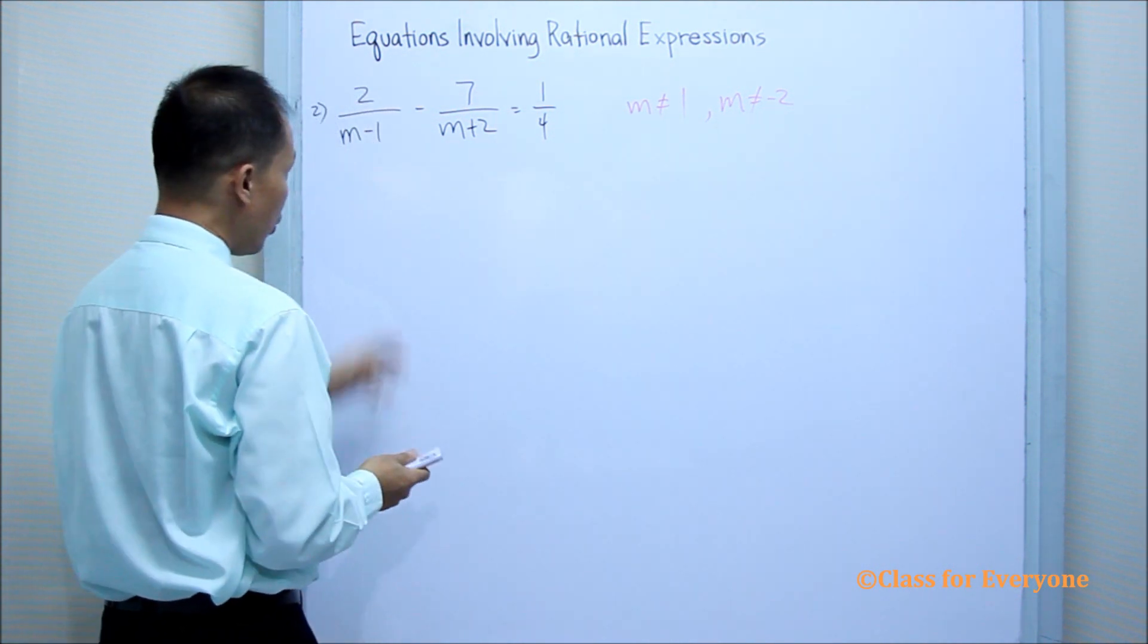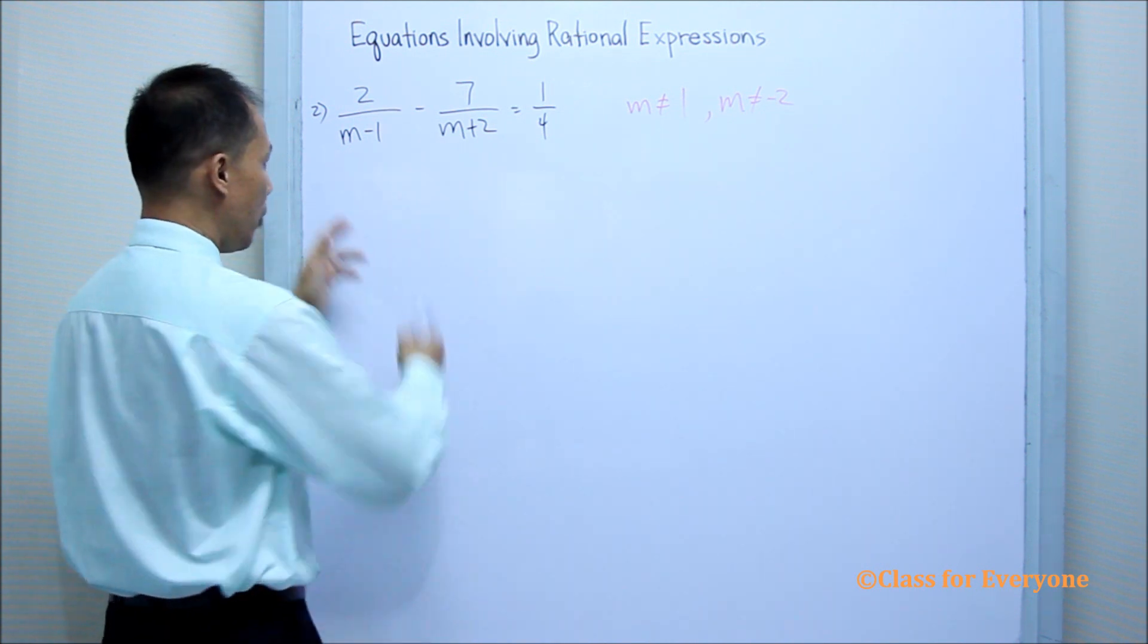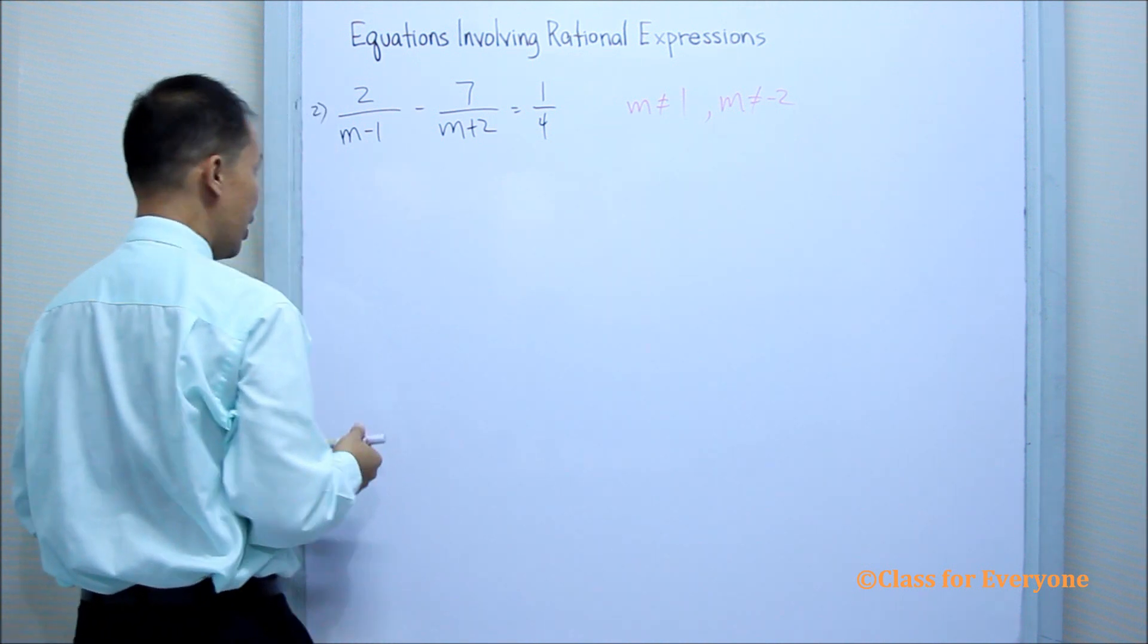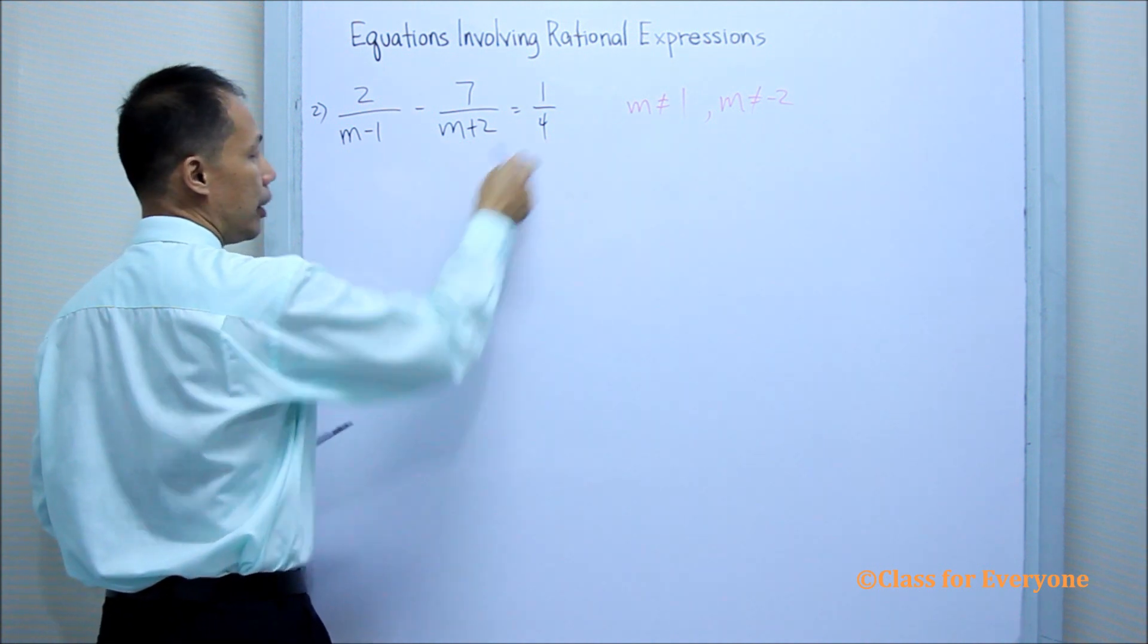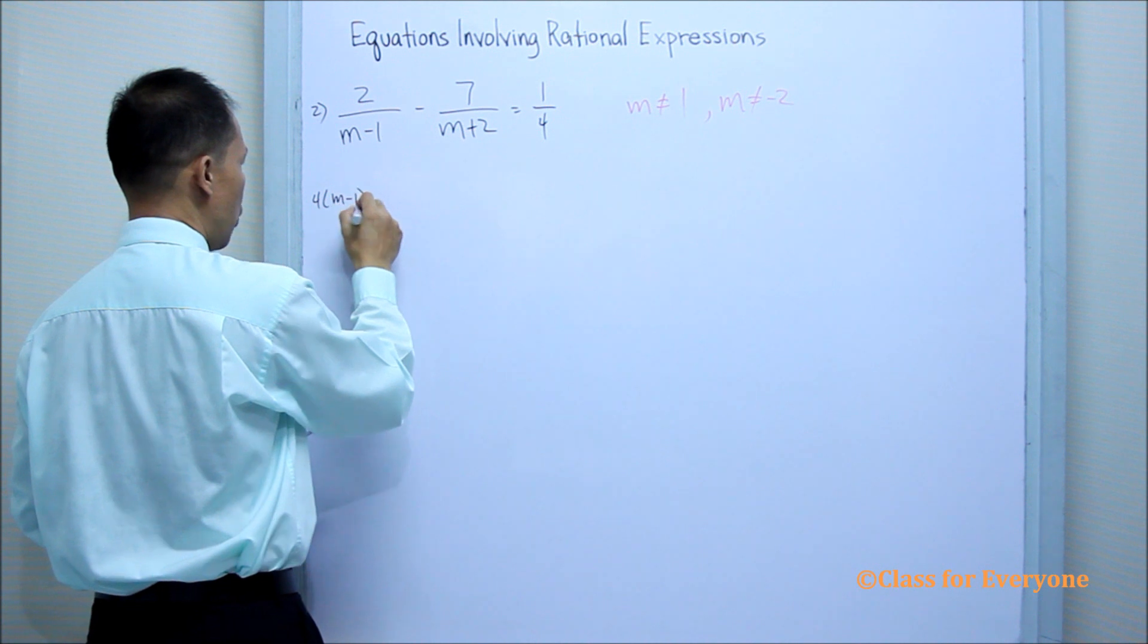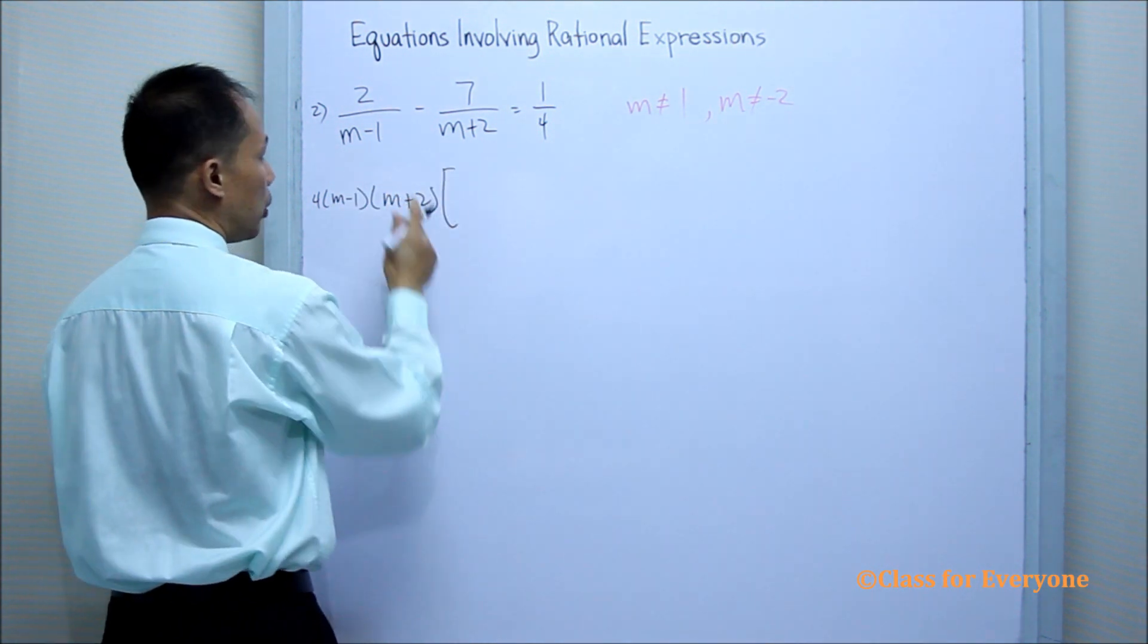So in order to solve for this one, let us get the LCD and then multiply it to each term of the equation. The LCD, since they do not have a common factor, the LCD now will be the three denominators. So 4 times m minus 1 times m plus 2 multiplied to